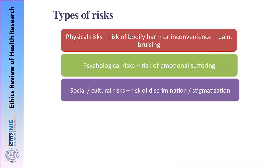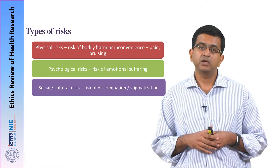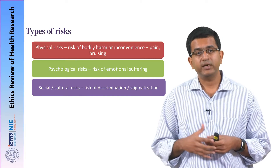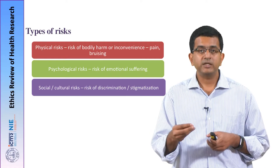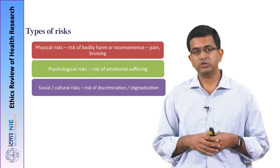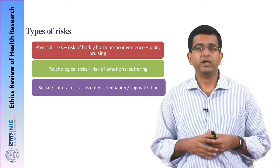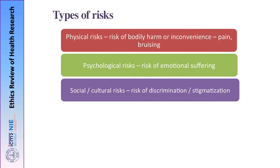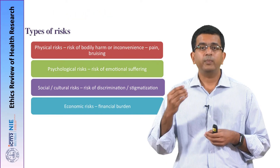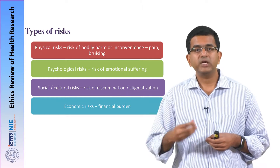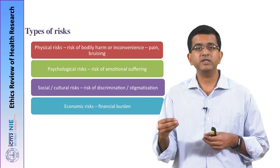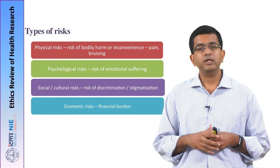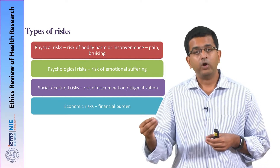Then there can be social and cultural risks. For example, if there is a research project on tuberculosis in a community, as we know tuberculosis is a stigmatizing illness, there is a huge risk of the participant being identified as somebody with tuberculosis and being discriminated against or stigmatized in the community. This is a typical example of a social or cultural risk. There can also be economic risks — for example, if a participant undergoes a disability due to an adverse event and because of this disability they are unable to carry out their livelihood, they may have a financial burden.